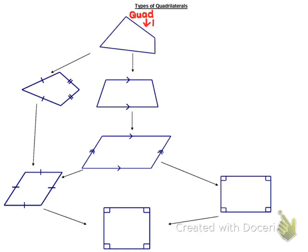The most basic quadrilateral is any four-sided shape. Because it's a very general family, there's only one important thing about all quadrilaterals, and that is that the angles in a quadrilateral will add to 360 degrees.